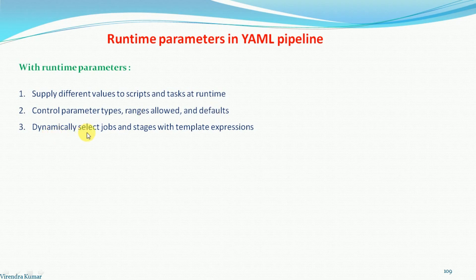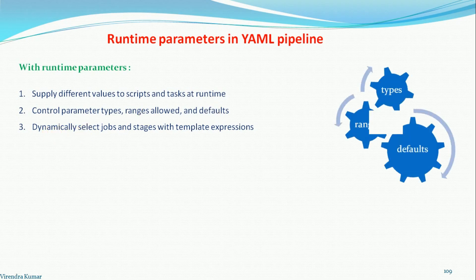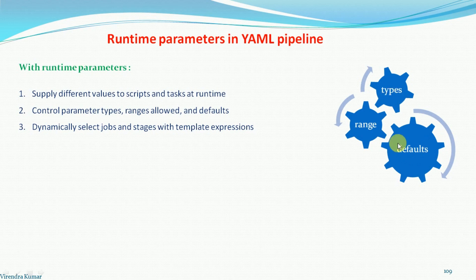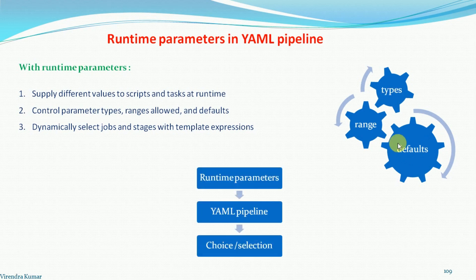We can also dynamically select jobs and stages with template expressions. The runtime parameters define the type, range, and the defaults — these are the three categories where we use runtime parameters. Once we define these things we can pass the parameters to the YAML pipeline.